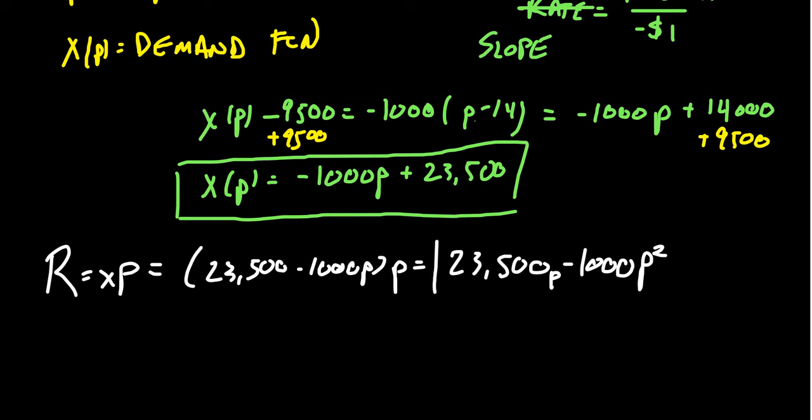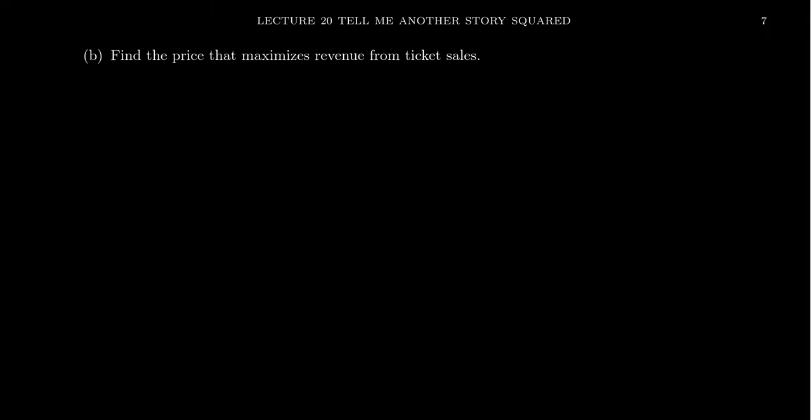So this tells us how we can compute the revenue. Now what we want to do with this is actually consider what is the maximum revenue. We want to make the most money for our arena here. What is the best price to get the most money for this company here? Well, since revenue was 23,500 P minus 1,000 P squared, we can then compute the maximum revenue.